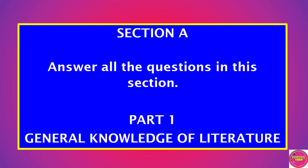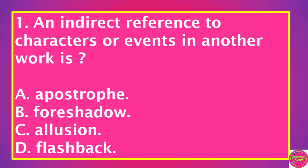Section A. Answer all the questions in this section. Part 1: General knowledge of literature. Question 1: An indirect reference to characters or events in another work is: A. Apostrophe, B. Foreshadow, C. Allusion, D. Flashback. The correct answer to this question is C. Allusion.